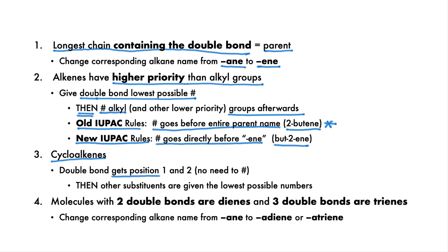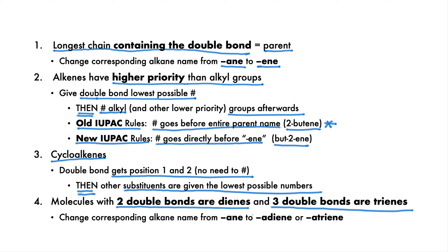In cycloalkenes, the double bond is assumed to be at position 1 and 2 and is not numbered. The direction of the 1-2 numbering is determined by giving any substituents the lowest possible numbers. Molecules with two double bonds are called dienes and molecules with three double bonds are called trienes. Change the -ane ending of the corresponding alkane to -diene or -triene.